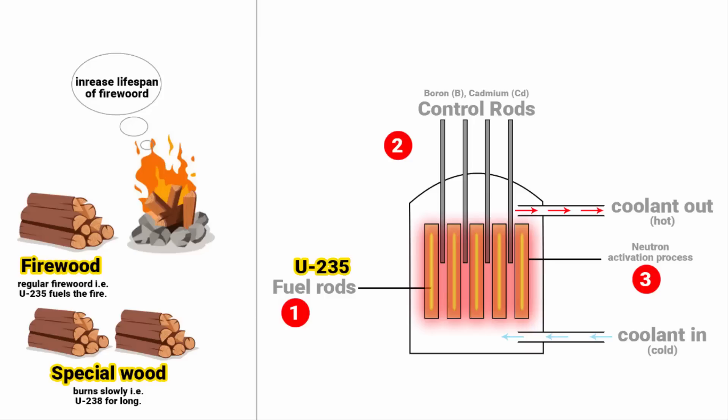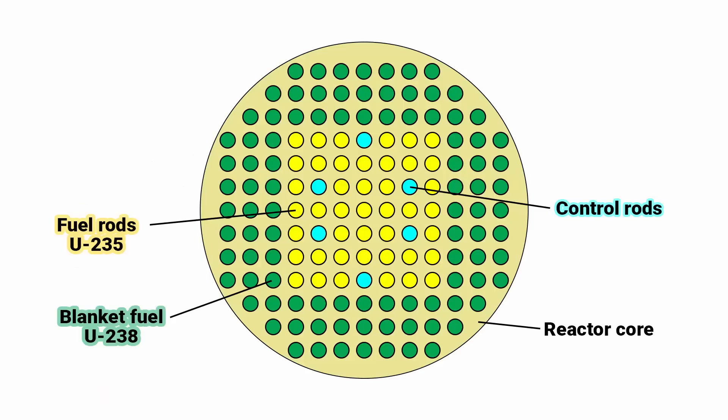So in a fast breeder reactor, the mechanism is the same. At the core of the reactor, there are uranium-235 fuel rods and control rods. But these fuel rods are surrounded by a blanket of non-enriched uranium-238. This blanket does not have any specific shape. It is placed in layers and different patterns which will be further developed based on observation and data.